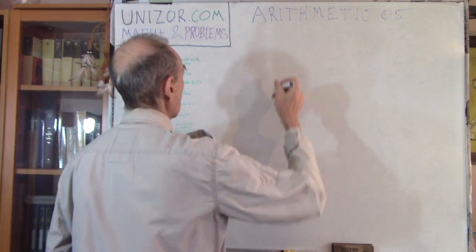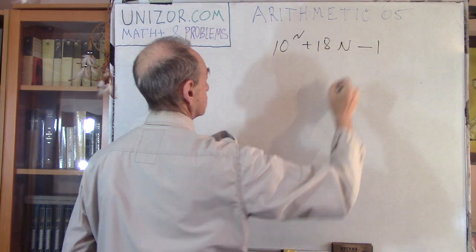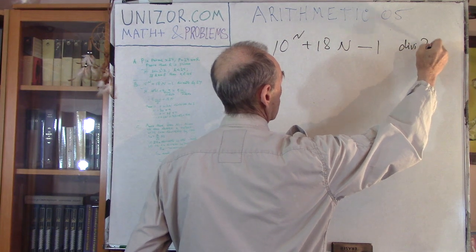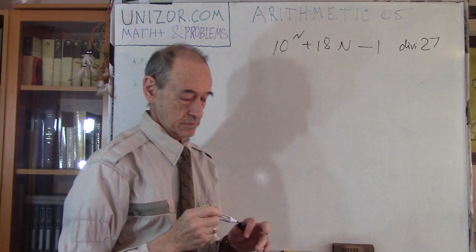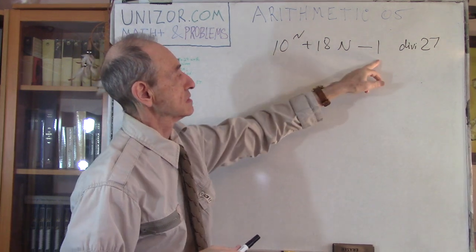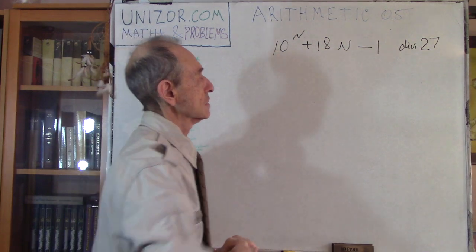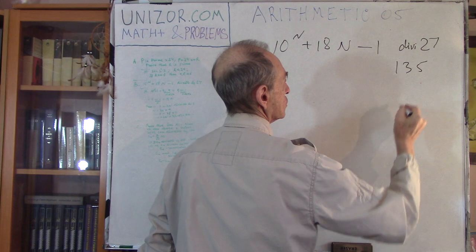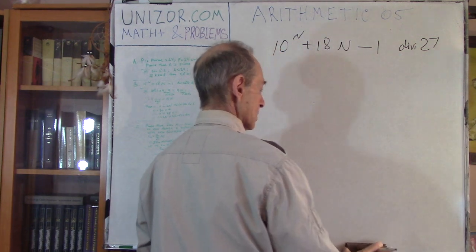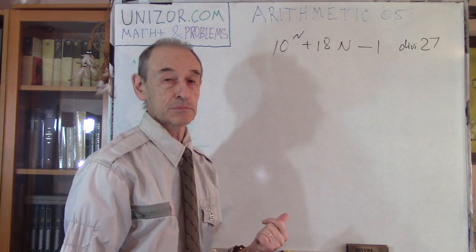Next problem: consider the number 10^n + 18n − 1. I would like to prove that it's divisible by 27, regardless of n. Let's check: if n = 1, that's 10 + 18 − 1 = 27. If n = 2, it's 100 + 36 − 1 = 135, which is 5 × 27. So for any n this should be divisible by 27. Pause this lecture and try to prove it yourself.